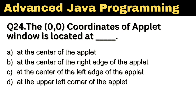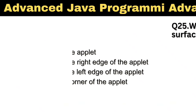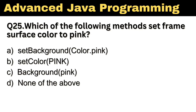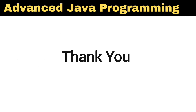Question No. 24: The 0, 0 coordinates of Applet window is located at dash. The right answer, Option D, at the upper left corner of the Applet. Question No. 25: Which of the following methods sets the frame surface color to pink? The right answer, Option E, setBackground(Color.pink). Hope this video is very useful for you. Please like, comment, and don't forget to subscribe to my channel for more videos. Thank you.